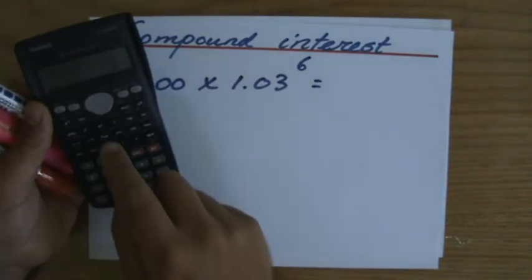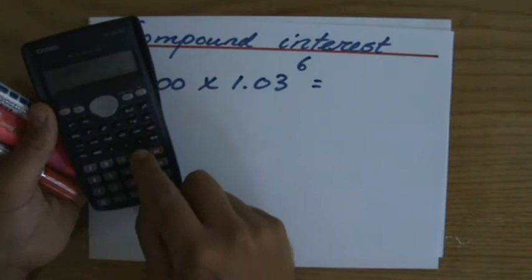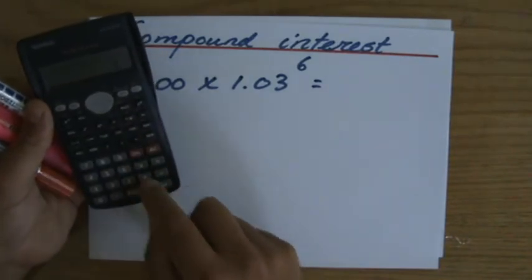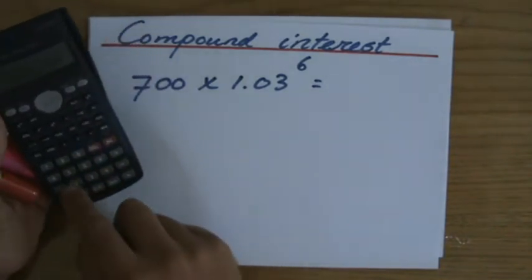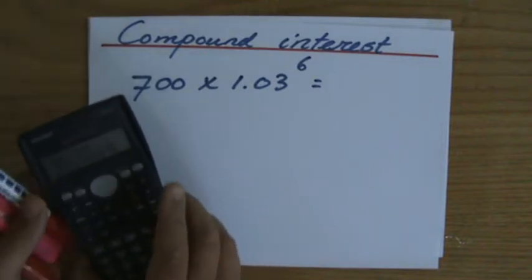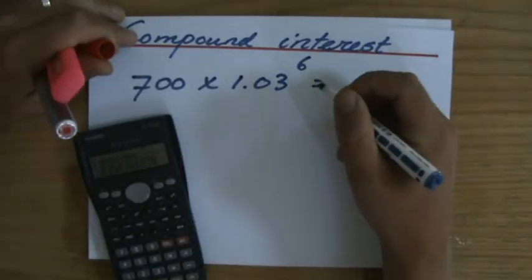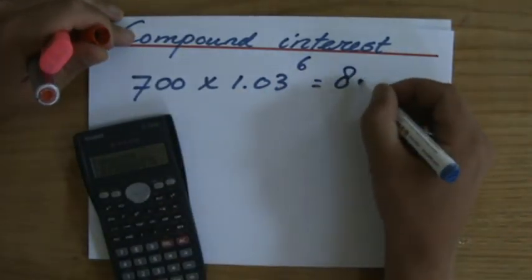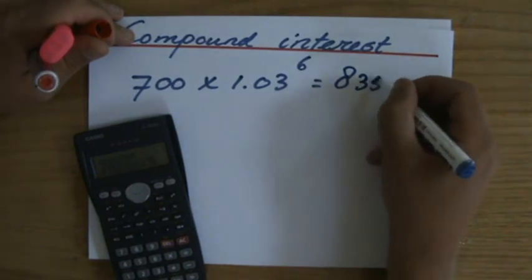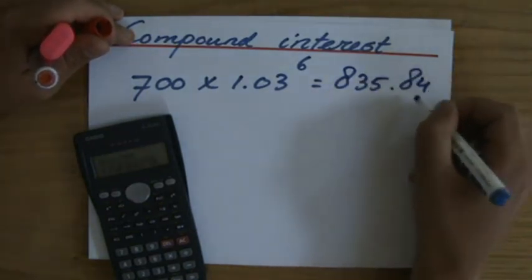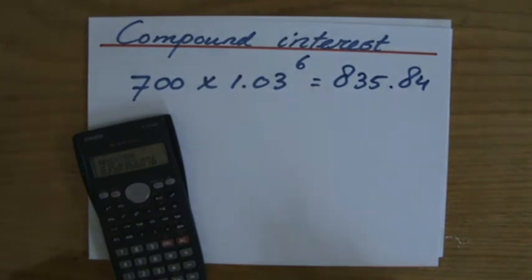1.03 to the power six, oh no, to the power six, there we go, times 700. All right. So after those six years, I'm going to get, or I have $835.84. Two decimal places with money, those are your cents.